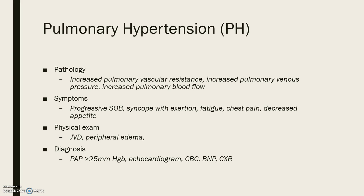Additionally, due to hypoxemia, polycythemia may be identified. BNP is consistently elevated and greater than 180, indicating right heart strain. However, caution should be used because of false positives, including left heart failure, sepsis, age greater than 70, renal failure, and GFR greater than 60.